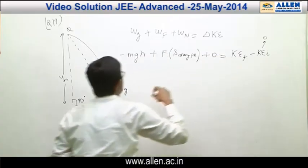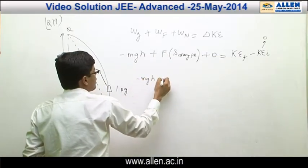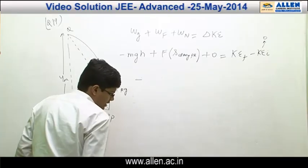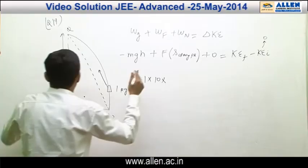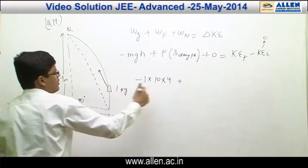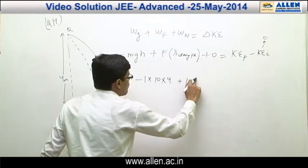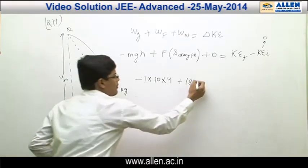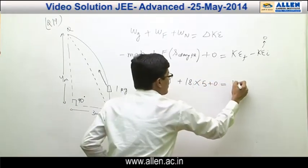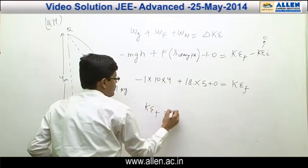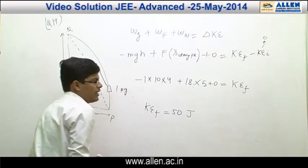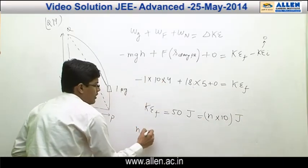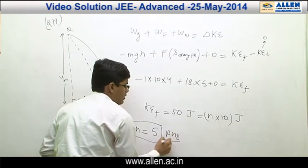Change in kinetic energy is KE final minus KE initial. Since the block starts from rest, KE initial is zero. Substituting values: mass is 1 kg, g × h = 4 m, F along PQ is 18 newton, and displacement along PQ gives a result of 50. So KE final equals 50 joules. The answer is in the form n × 10 joules, so the value of n equals 5.